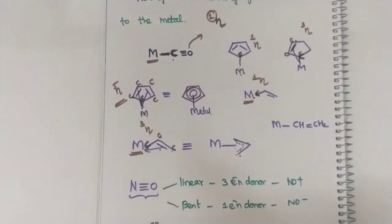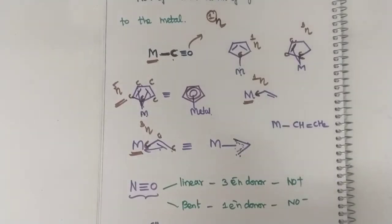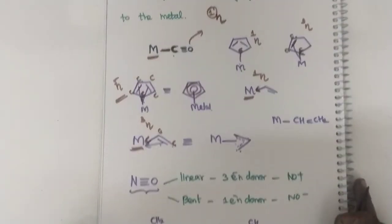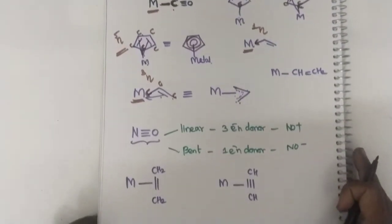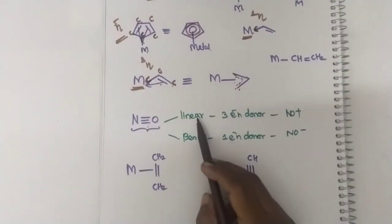This is how you find out the hapticity. The hapticity concept is very simple — the number of donor atoms of the ligand attached to the metal is known as hapticity. Now see here in this case, nitrosyl — it has two forms: linear and bent.